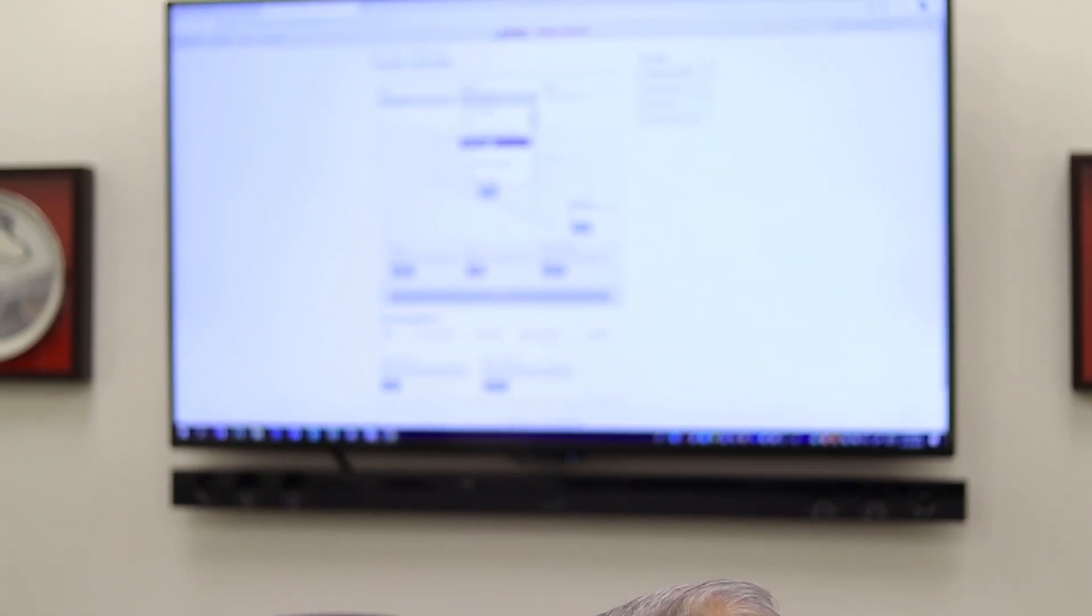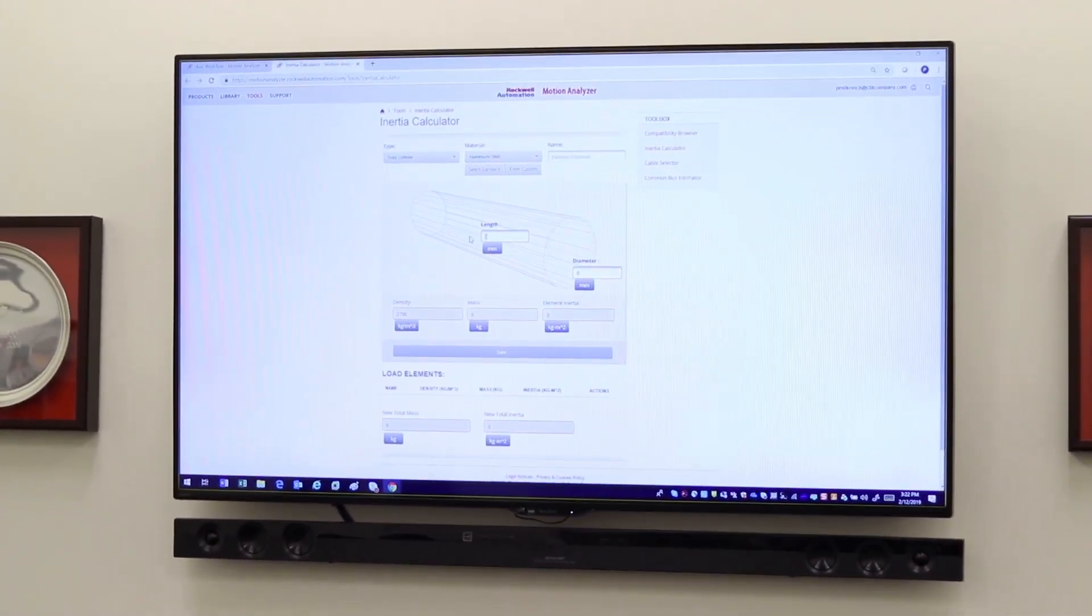The solutions that we provide come in a lot of different forms. One would be training. It could be product training. It could be training on applications. In this instance, we were offering training on engineering tools that one of our suppliers provides, Rockwell Automation. In this video, we were showing Integrated Architecture Builder, which is a very good tool for designing automation systems.